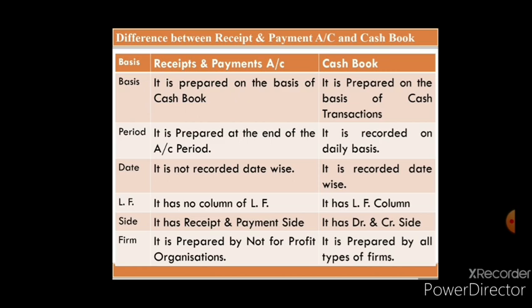Differences between receipts and payment account and cash book: Basis — receipts and payment account is prepared on the basis of the cash book, whereas the cash book is prepared on the basis of cash transactions. Period — receipts and payment account is prepared at the end of the accounting year, whereas the cash book is prepared on a regular basis. Date — it is not recorded date-wise. Ledger folio column — receipts and payment account does not have an LF column, whereas cash book has an LF column. Sides — receipts and payment account has two sides: receipts and payments; cash book has two sides: debit and credit. Firm — receipts and payment account is prepared by not-for-profit organizations, whereas cash book is prepared by all kinds of organizations.